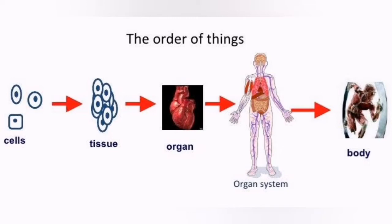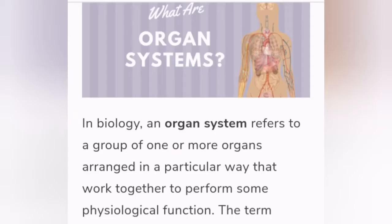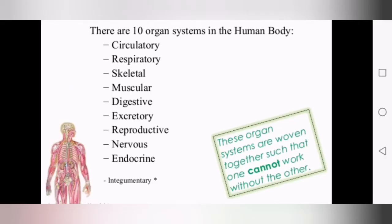First, cells. Group of cells are called tissues. Group of tissues makes an organ, and group of organs make an organ system. Group of organ systems makes a complete body. So now you have understood that an organ system is composed of so many organs.